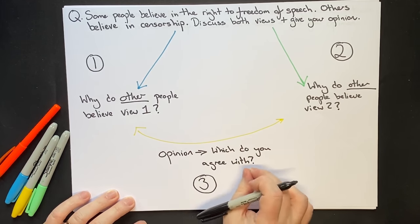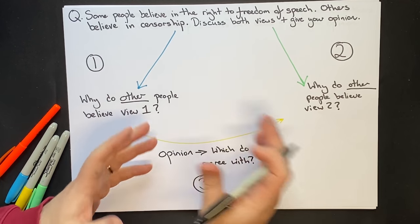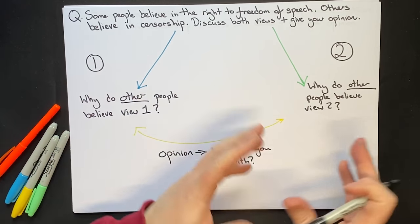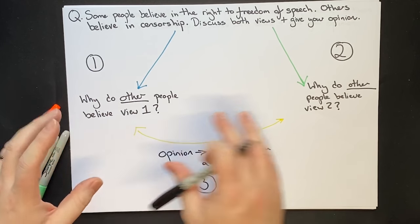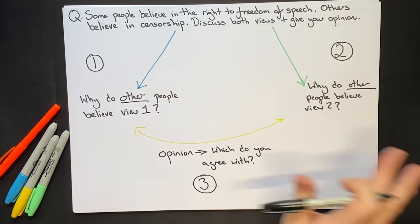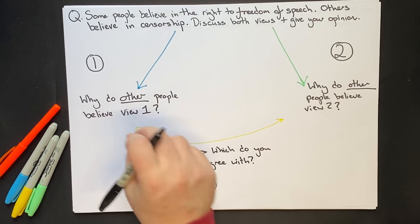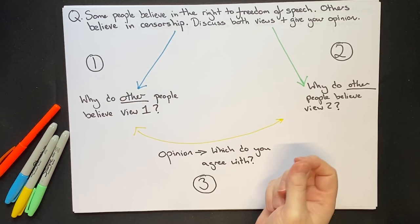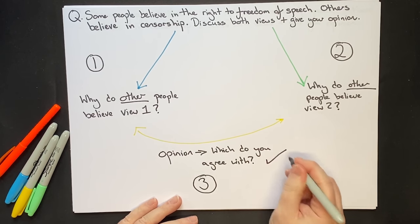Keep it very, very simple. Don't say 'I kind of agree with this and I kind of agree with that — in this situation I do this.' You don't have time for that. Just pick one side that you agree with, think of why you agree with it, and then that's done.